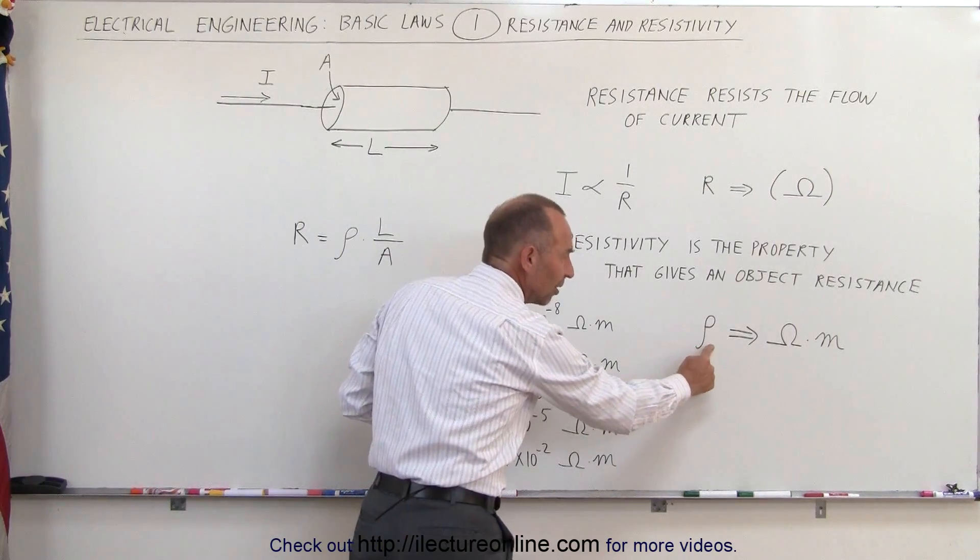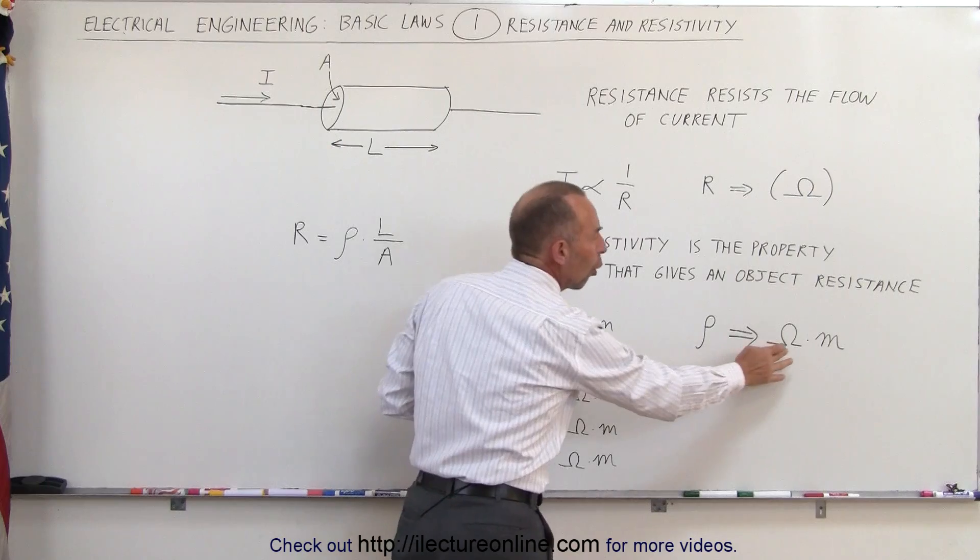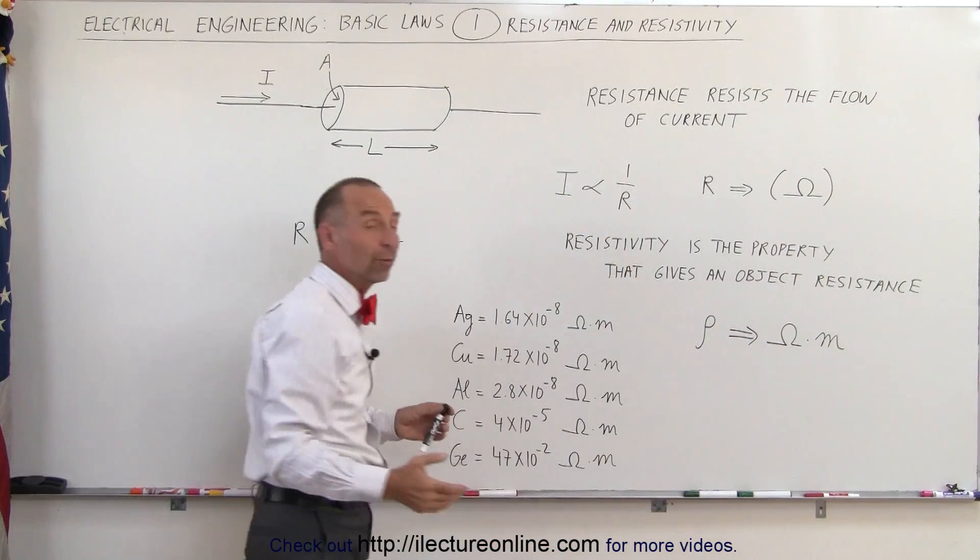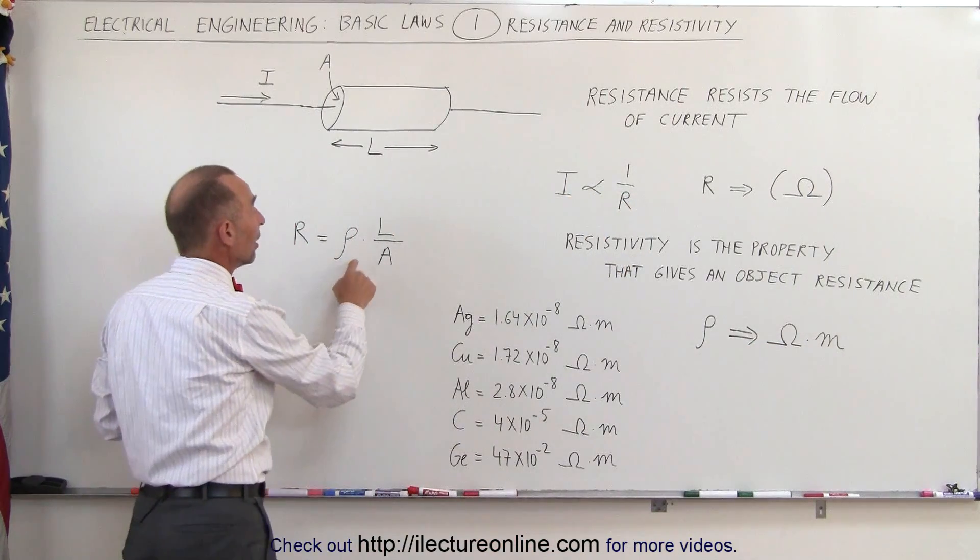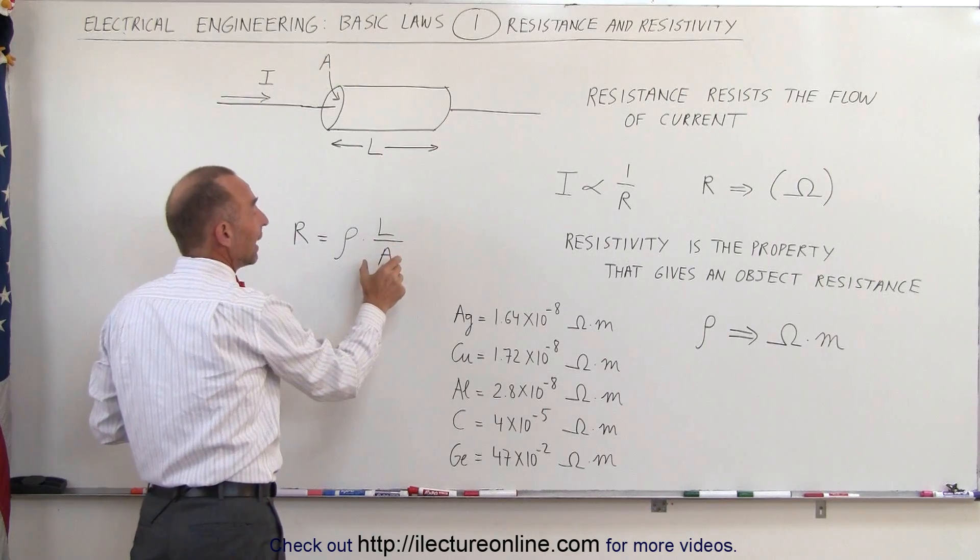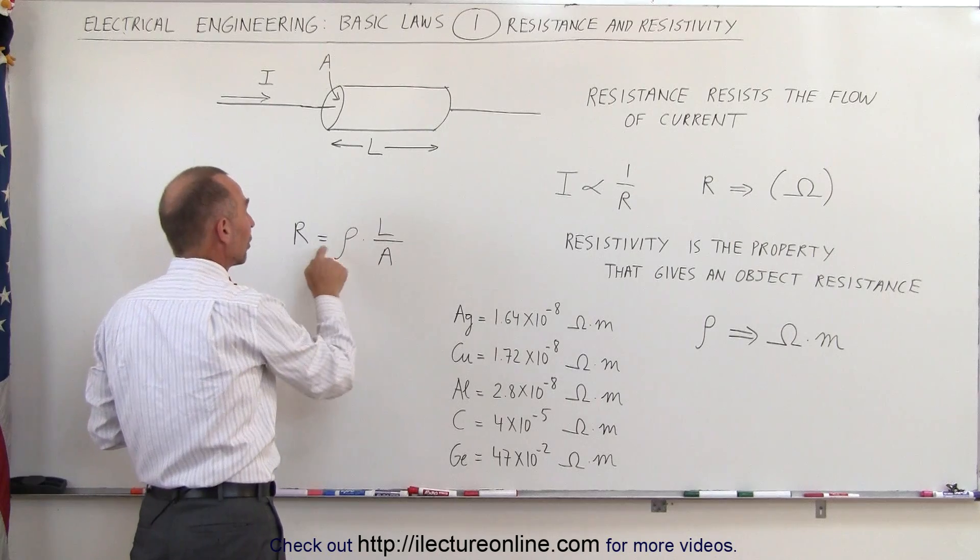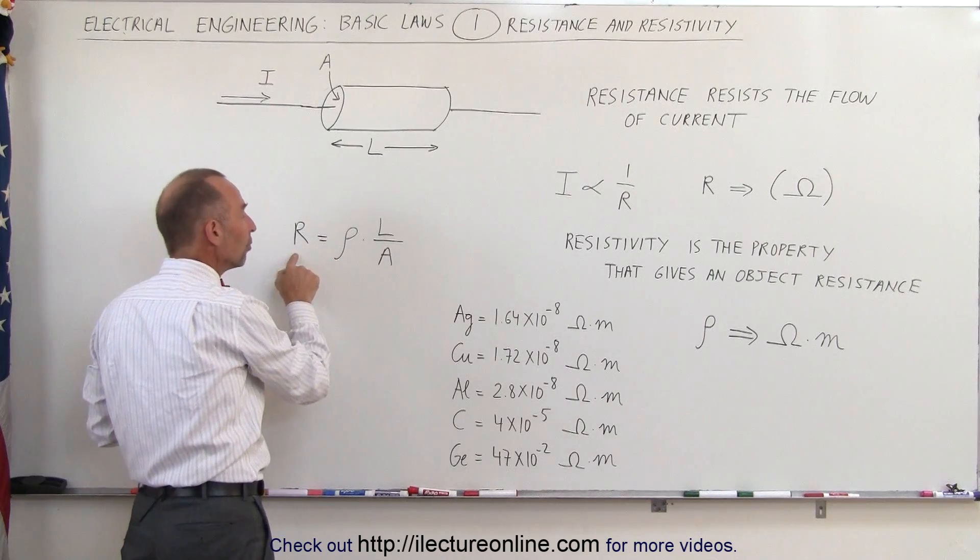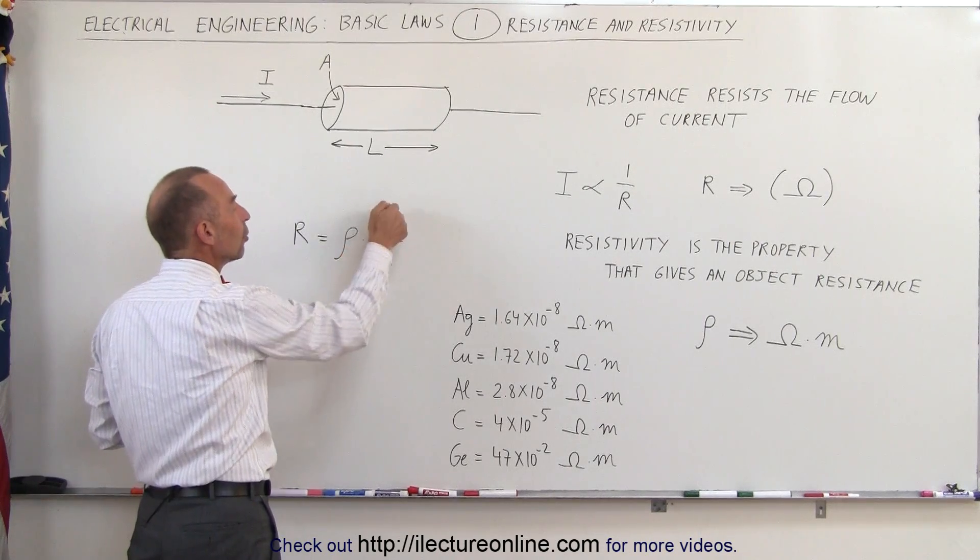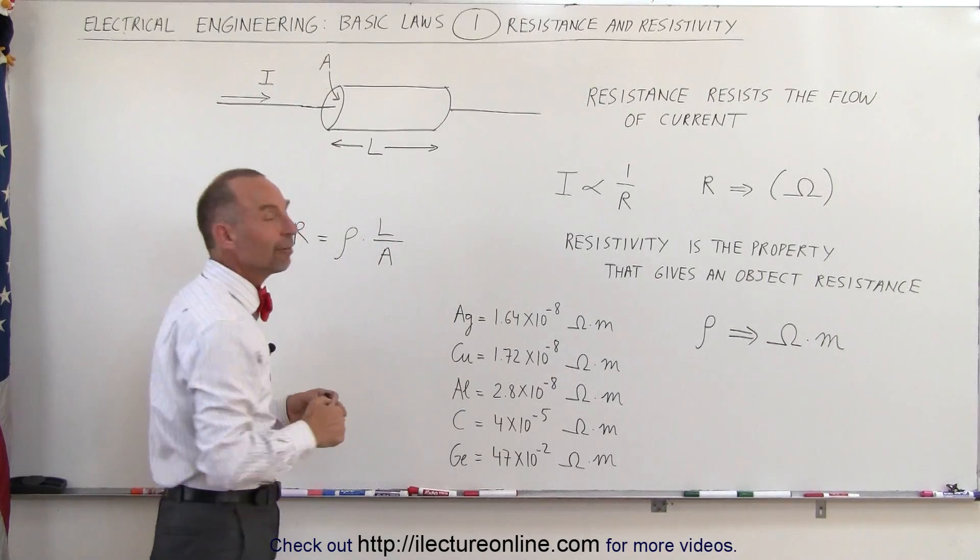The units are ohms times meters. The reason why we need it to be ohms times meters is because length is meters to the first power, area is meters to the second power. We have to negate the concept of meters to get resistance, which is simply in ohms. So ohms times meters will negate the meters squared divided by meters.